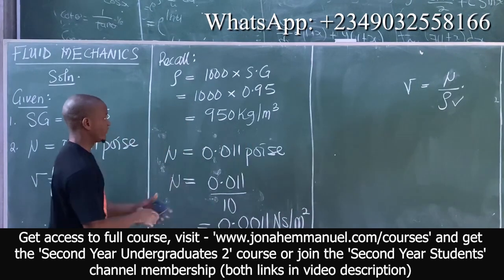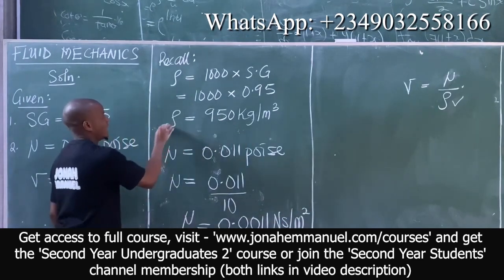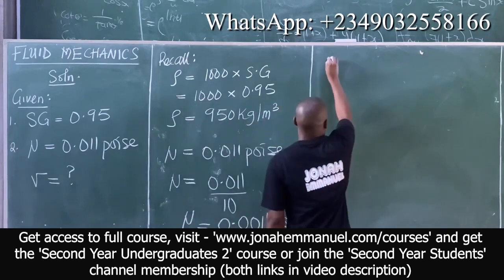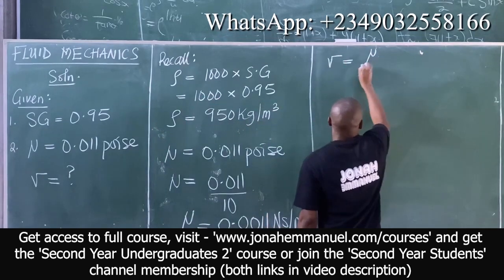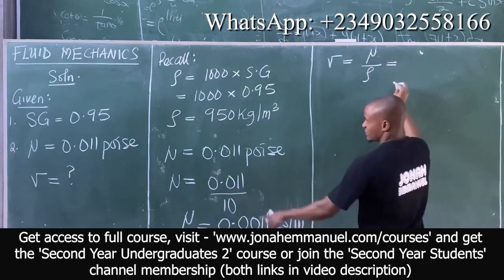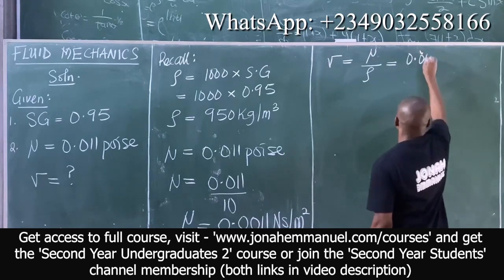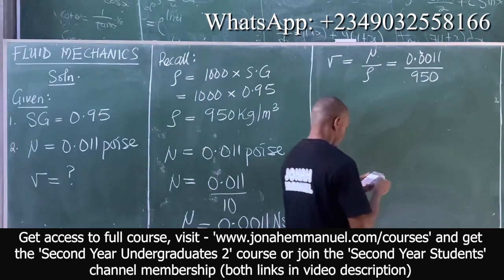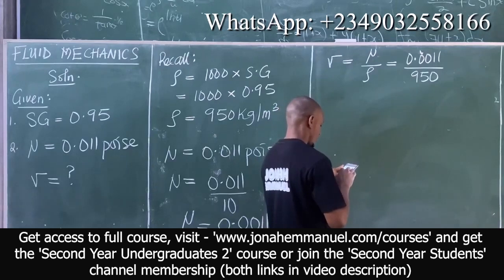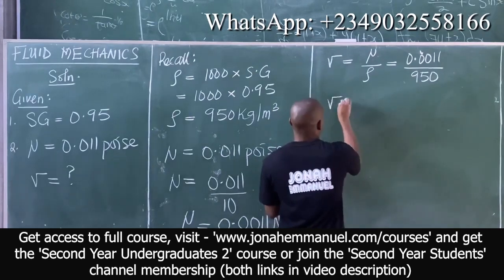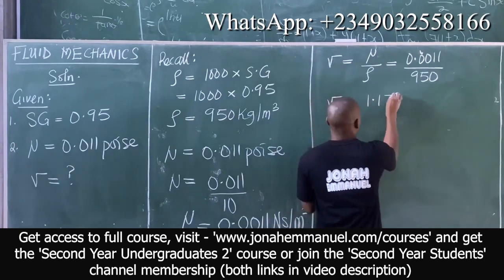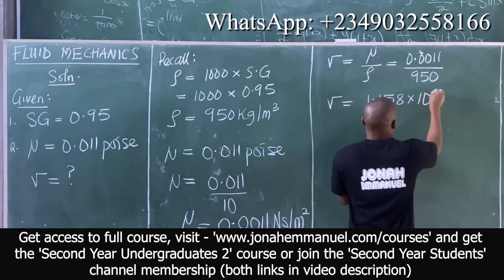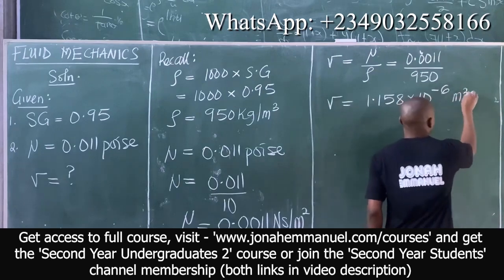So the dynamic viscosity is equal to 0.011 over 10, and that would be 0.0011 Newton seconds per meter squared. So we now have these two values: the dynamic viscosity and the mass density. So we get our kinematic viscosity. Kinematic viscosity is equal to dynamic viscosity all over mass density, and that's equal to 0.0011 all over 950. This gives the kinematic viscosity to be 1.158 times 10 to the power minus 6, and the unit is meter squared per second.